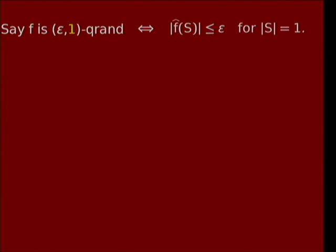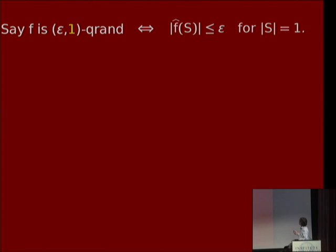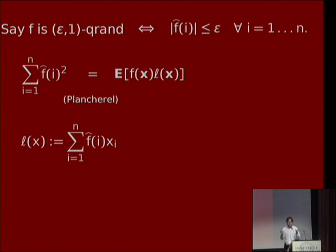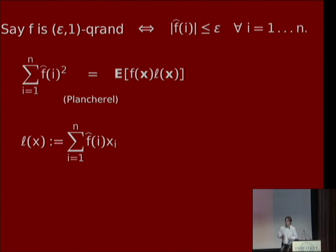Here's how we're going to do it. We introduce the function L(x), which is just the linear part of f's Fourier expansion: the sum of f-hat-i times x_i. Having done that, it's very easy to see that this quantity — the sum of squares of degree-one coefficients — equals the expected value of f(x) times L(x), by the Plancherel identity. Now, since f's values are plus or minus one, this is at most the expected value of the absolute value of L(x).